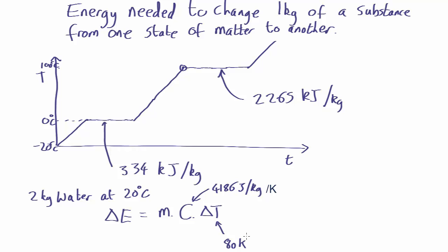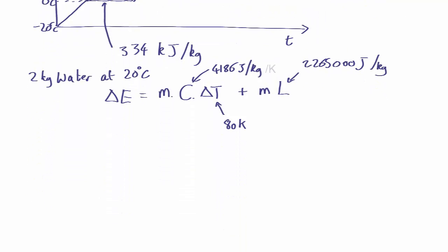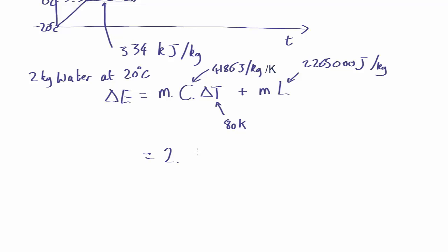But then once it's got to water at 100 degrees you have to turn it into steam at 100 degrees and that's going to need the latent heat. So we now need to add the mass times the latent heat which is 226500 joules per kilogram. So this equals the mass 2 kilograms times the specific heat capacity 4186 times the change in temperature plus the mass 2 kilograms times the latent heat of vaporization, 226500, which comes out as a whopping 5,199,760 joules.